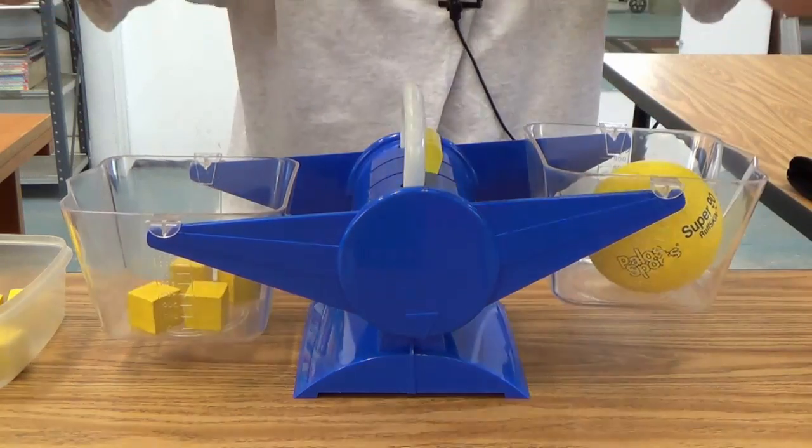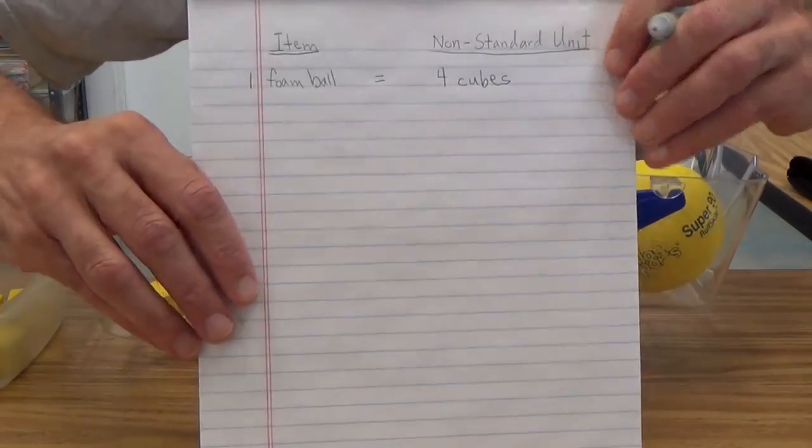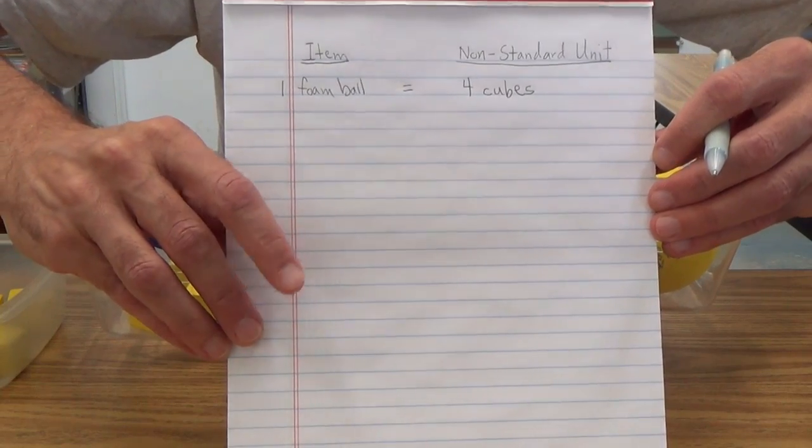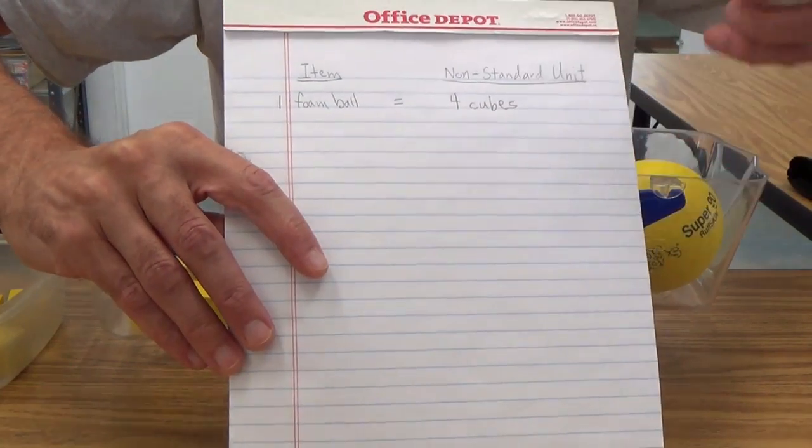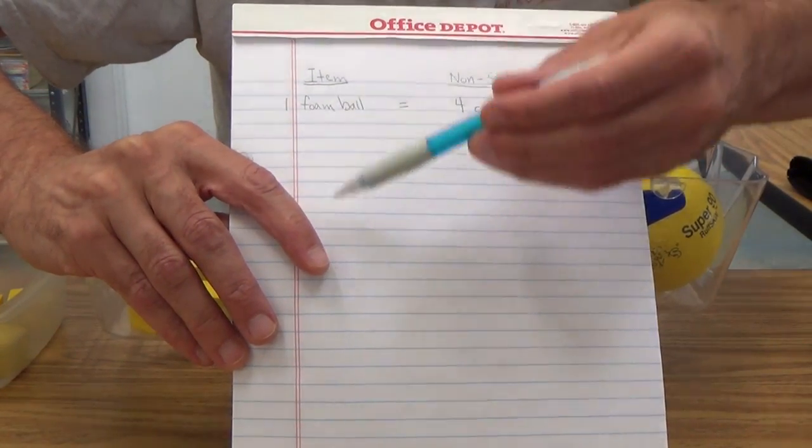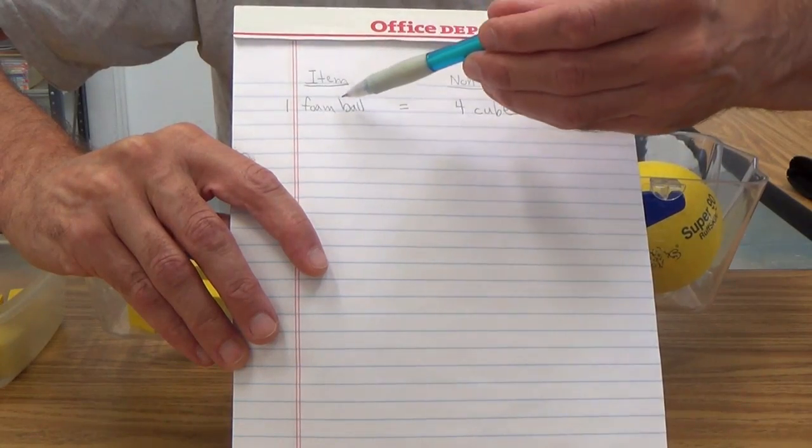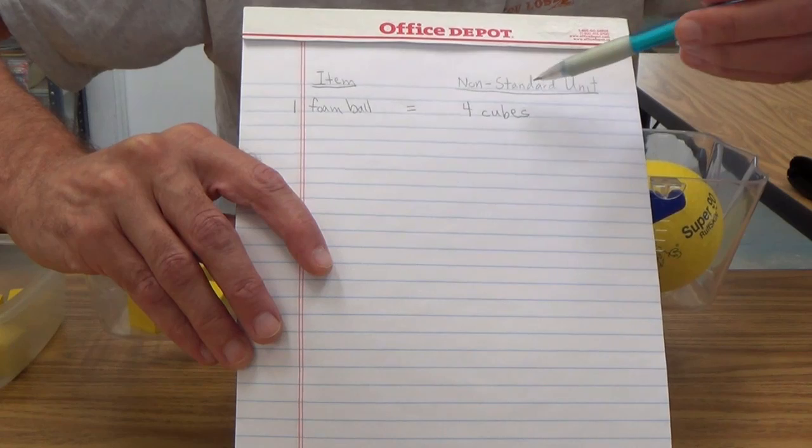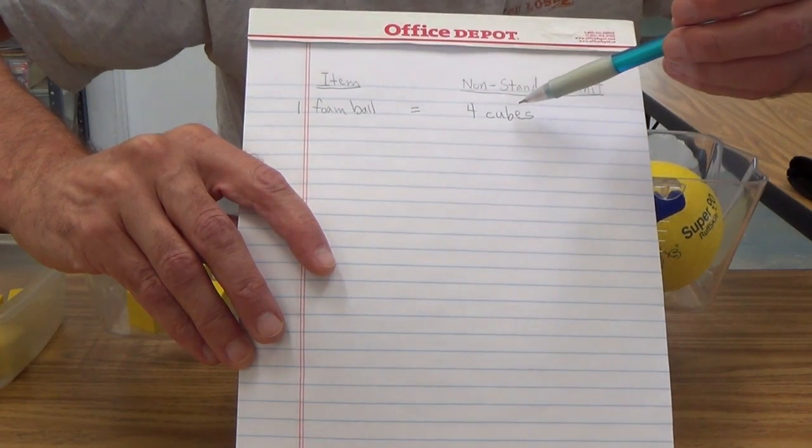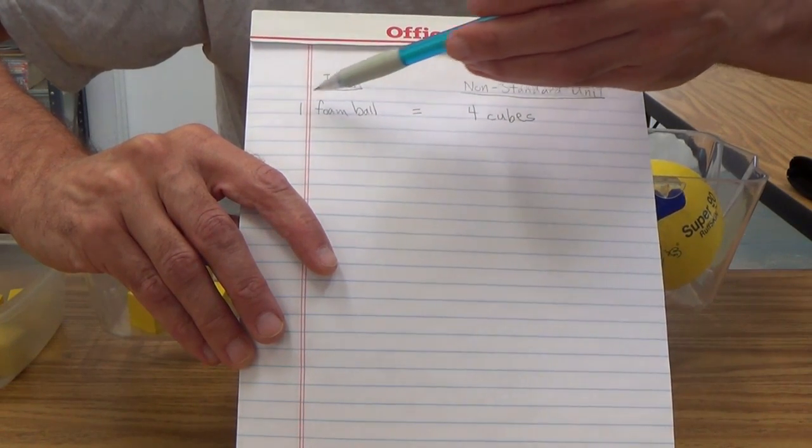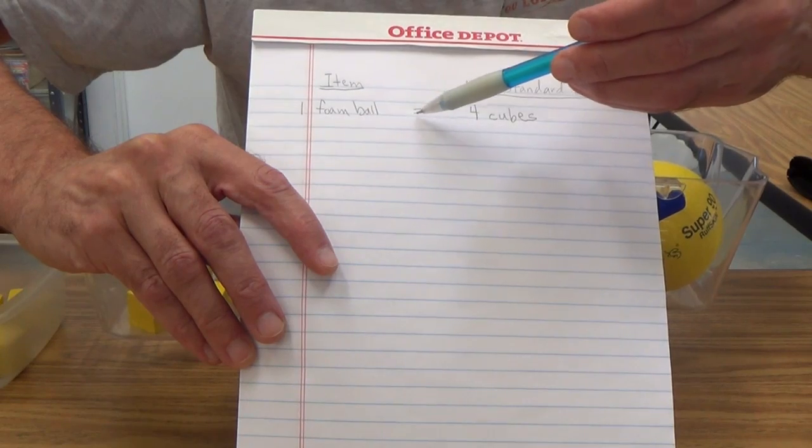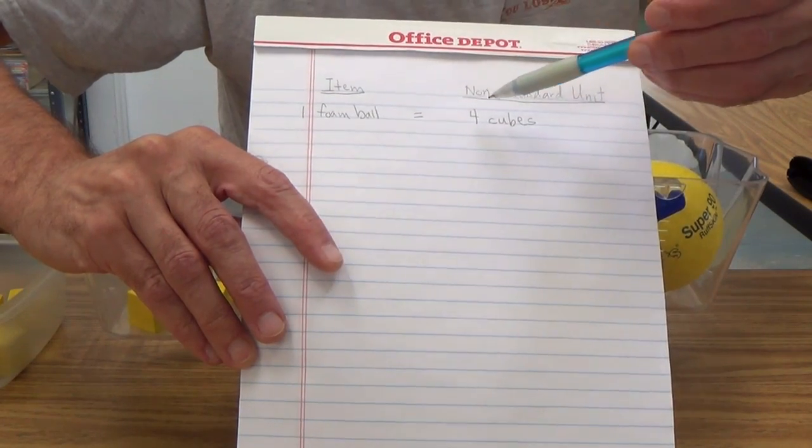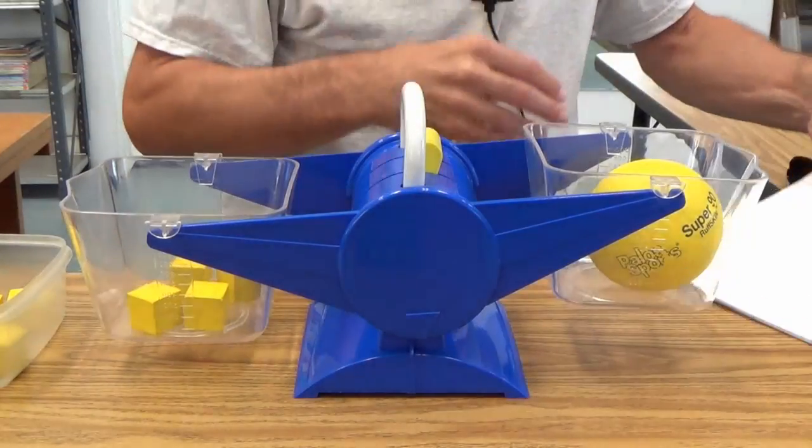And let me show you what I'm doing now very, very quickly. As you can see, I've made a kind of an informal list here in this column, we will have the item we're weighing over here. And in this column, the non-standard unit, and that's four cubes. So one foam ball is the same as, there's our equal sign, four cubes.